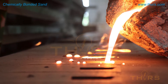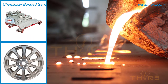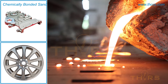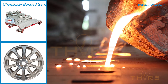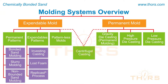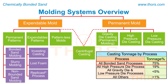Foundries use various molding systems to produce molds for castings, depending on the casting design. Molding systems can be broadly classified as expendable and permanent molding systems. Of all the molding systems, 75% of the castings produced worldwide use the bonded sand molding process, which is a type of expendable molding system.